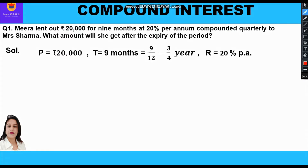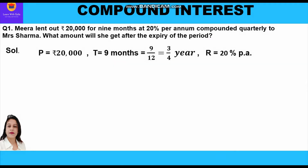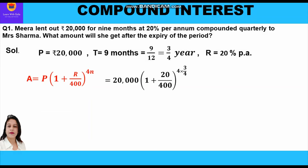Let us write what is given: principal P = rupees 20,000; time = 9 months = 9/12 = 3/4 year; rate of interest = 20 percent per annum. The formula for amount is A = P(1 + r/400)^(4n) since interest is compounded quarterly. Substituting: A = 20,000 × (1 + 20/400)^(4 × 3/4).